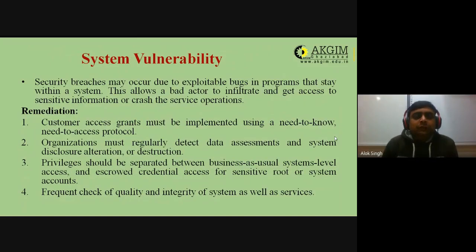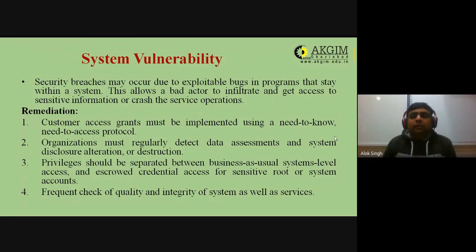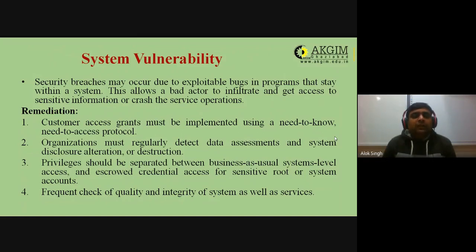The next threat is system vulnerability. A system is basically a combination of input, process, and output. Security breaches may occur due to exploitable bugs in programs within the system, allowing a bad actor to infiltrate, access sensitive information, or crash service operations. To avoid this, continuously check your system and immediately take corrective action if vulnerabilities or bugs are found.